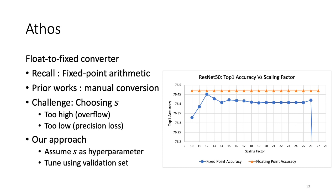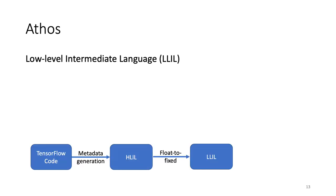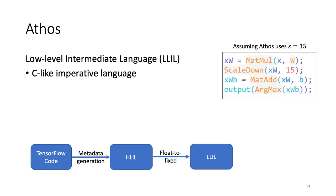Here is a graph showing how accuracy varies as Athos sweeps across multiple scale factors for our benchmark network ResNet-50. The constant line at the top is the floating-point accuracy of 76.47. Athos finds that at scale factor equal to 12, the accuracy peaks at 76.45, and then performs the conversion taking S equal to 12. Once the floating-point to fixed-point conversion is performed, Athos compiles HLIL to a low-level intermediate language called LLIL, a C-like imperative language for expressing the computation.